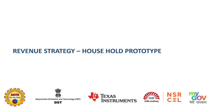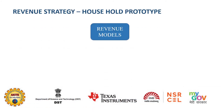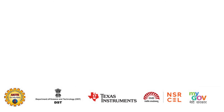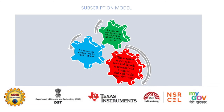The revenue strategy involves three models: subscription model, purchase model, and referral model. In the subscription model, customers can use the machine and return it after use; a minimum rental amount is charged for usage.